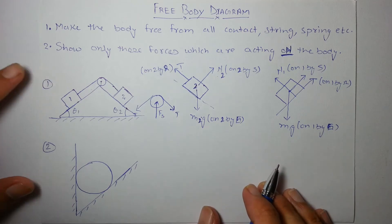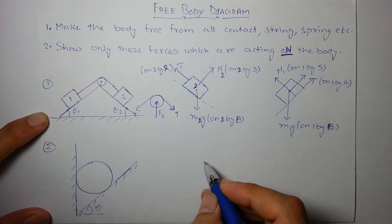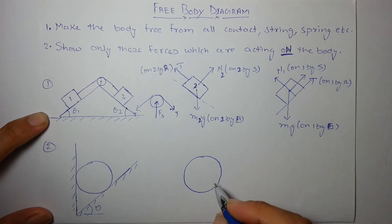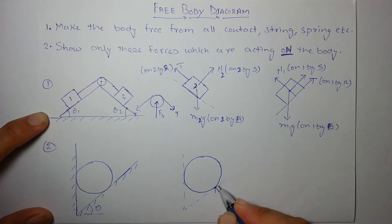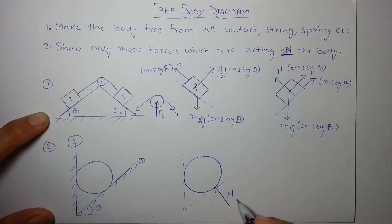What about this? Let's say this angle is theta with the horizontal. In the FBD of the block or the sphere, we'll just show these contacts by dotted lines so that we can easily draw this. Let's say this is wall one, this is wall two.